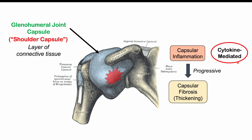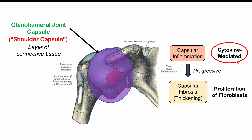There is inflammation of the shoulder capsule. Over time, that inflammation starts to reduce, but due to that inflammation the capsule becomes fibrotic and thickened. This thickening appears to be related to a proliferation of fibroblasts in the joint capsule.